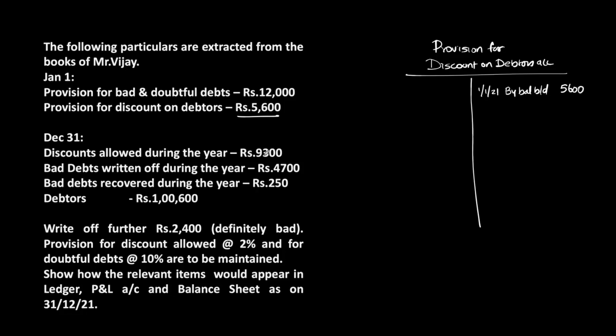Discount allowed during the year is a discount expense. We can take it to either P&L or provision for discount on debtors. Since the provision account is already open, this 9,300 is entered on the debit side: 31/12/21 to discount on debtors account, 9,300. Bad debts written off during the year of 4,700 can be adjusted in provision for bad and doubtful debts: 31/12/21 to bad debts, 4,700.